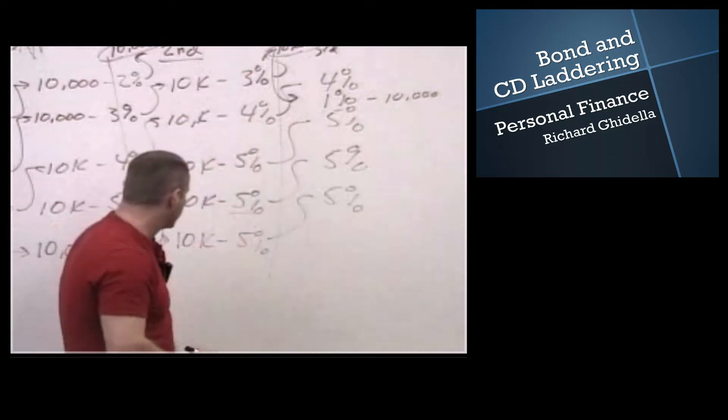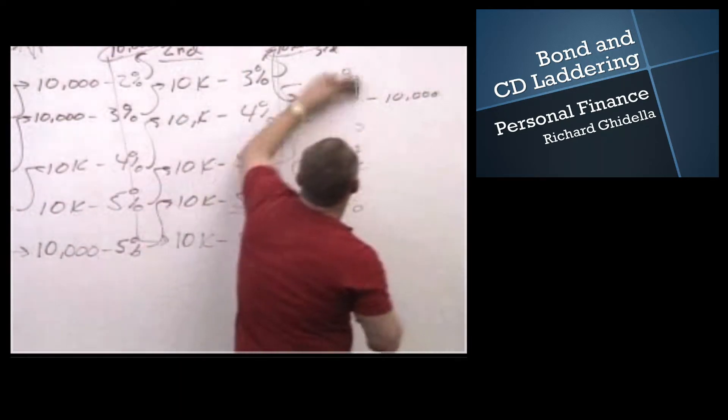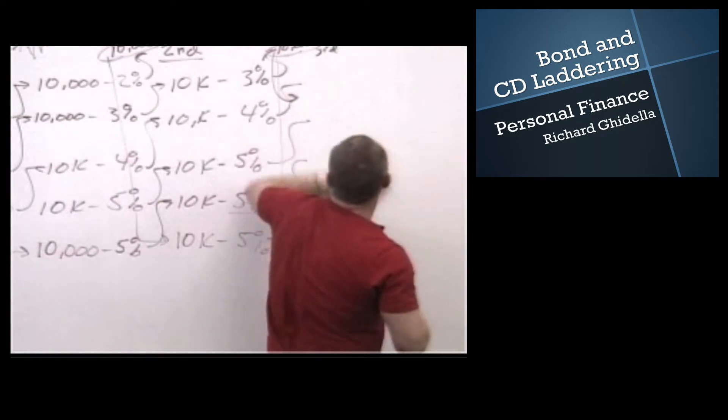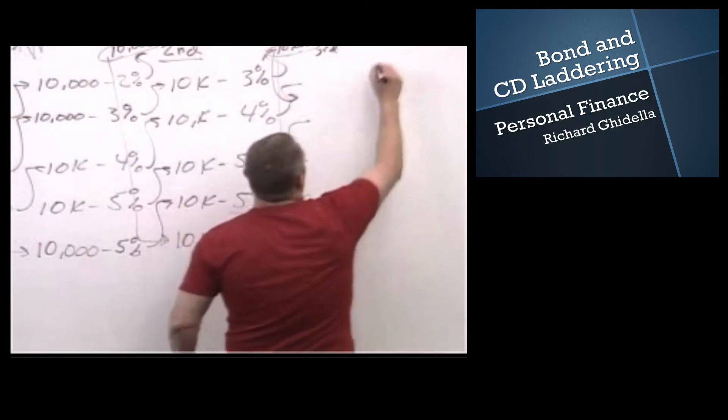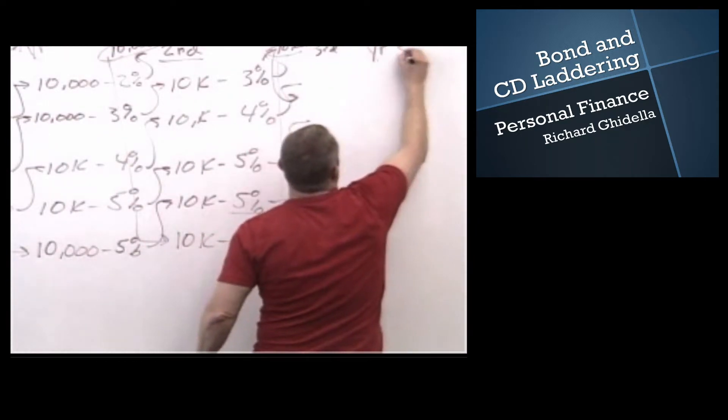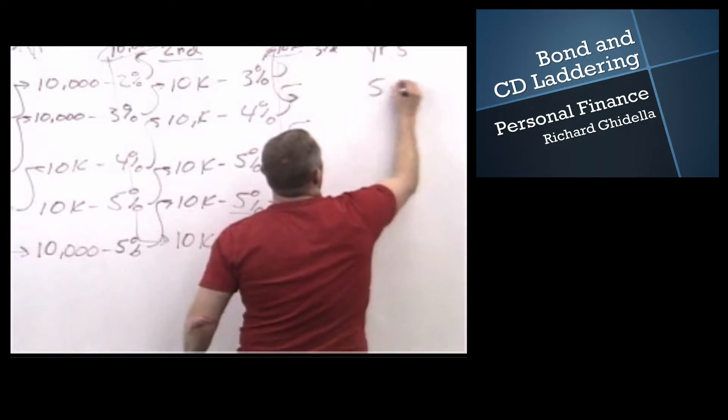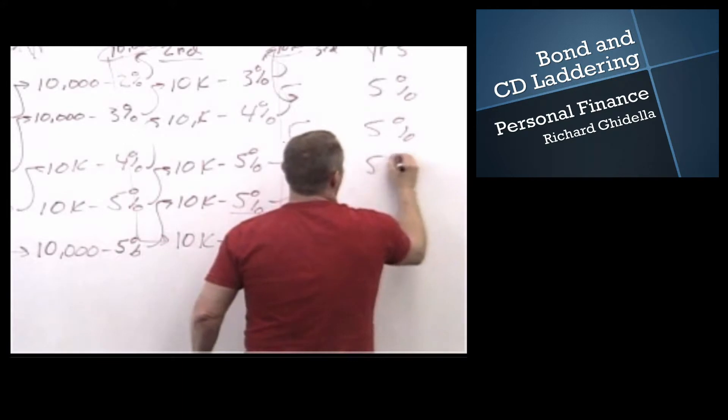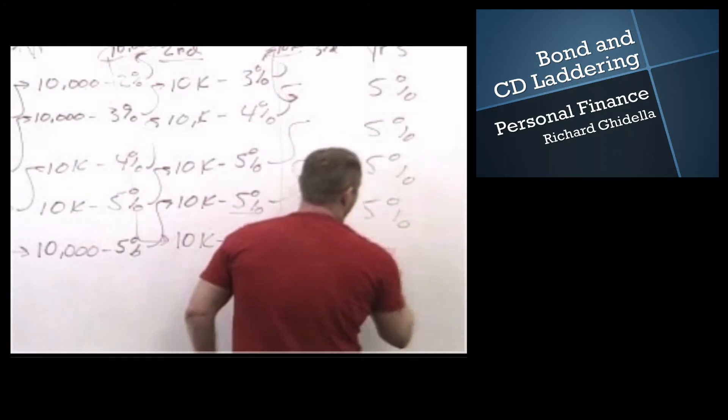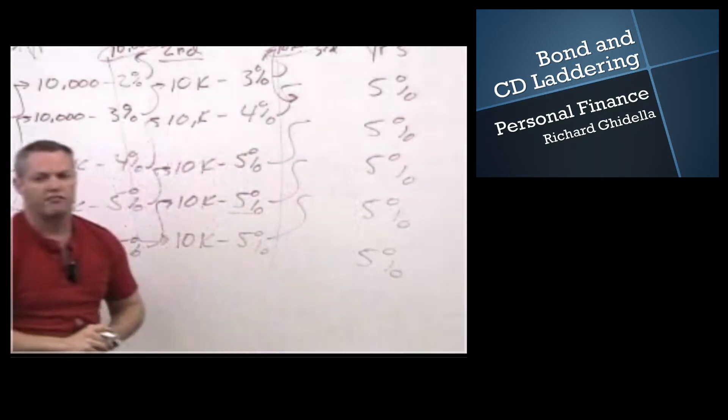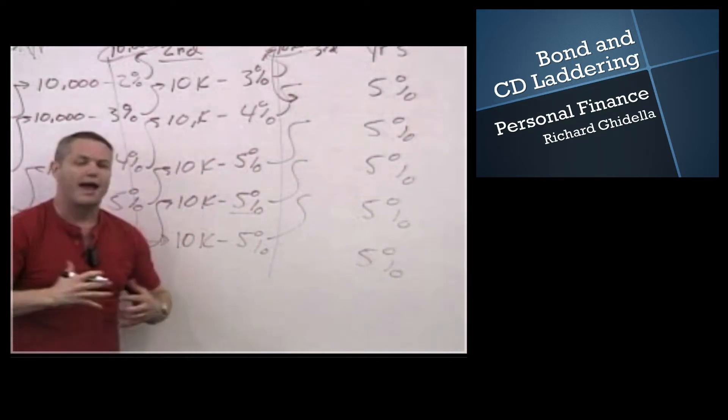Now if we had carried this out without shortening or extending, when we got out here to year five, what we would have had is our one year, two year, three year, four year, five year, all paying 5% and we will have maximized our yield under this situation.